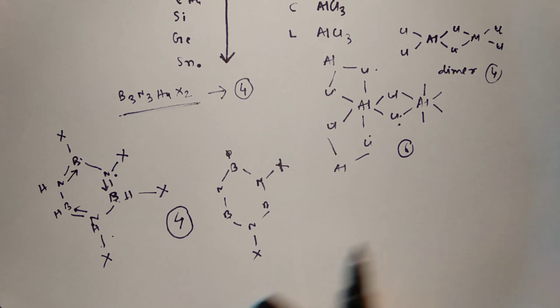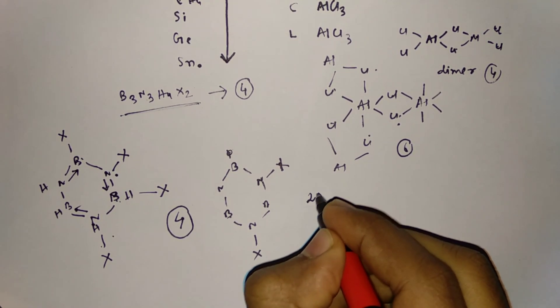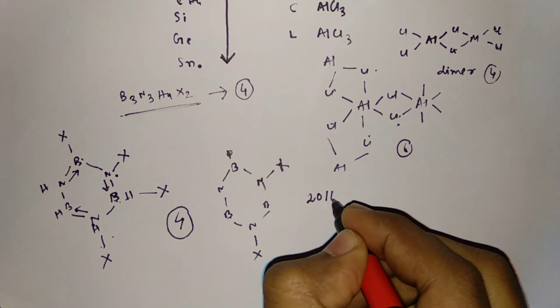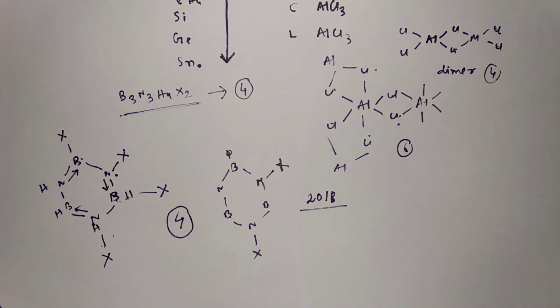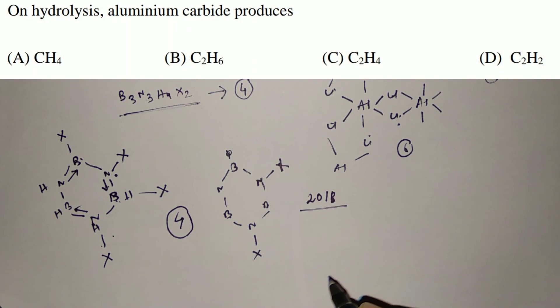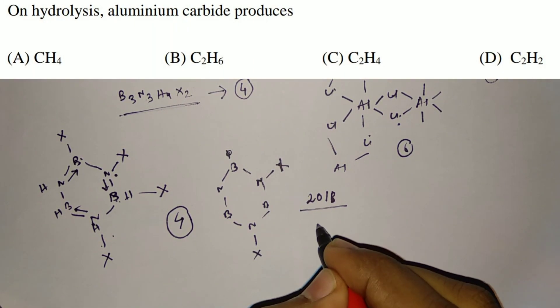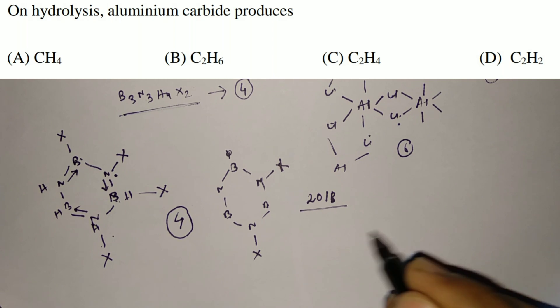Next, coming to JAM 2018. The first question was: on hydrolysis, aluminium carbide produces which of the following?